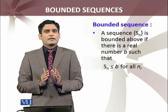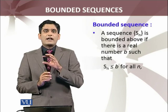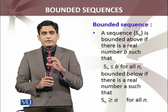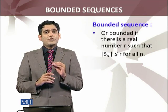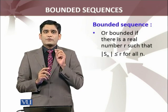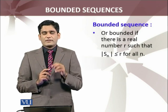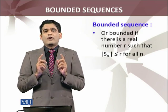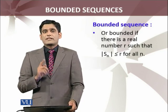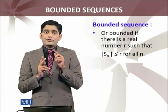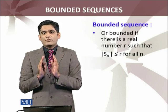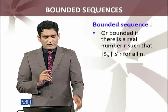A sequence is said to be bounded if it is both bounded above and bounded below. Combining both conditions: a sequence {S_N} is bounded if there exists a real number R such that the absolute value of S_N is less than or equal to R for all N. So a bounded sequence is one where you can find a real number such that the absolute value of each term is less than or equal to that real number.